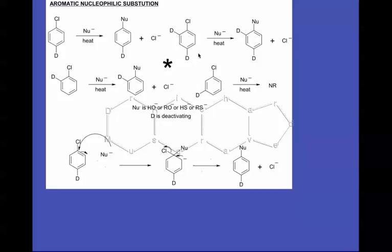The deactivating groups specifically have to go in the ortho or para positions to the chlorine group, and the more deactivating groups we have, the faster the reaction will go. So if we put one in the para position, we can get that reaction to work, so the nucleophile will replace the chlorine. We put deactivating groups in the ortho position to the chlorine and we can get that one to go as well — and this one will go even faster if we put one in the ortho and one in the para. However, putting a deactivating group in the meta position will not help the reaction at all.